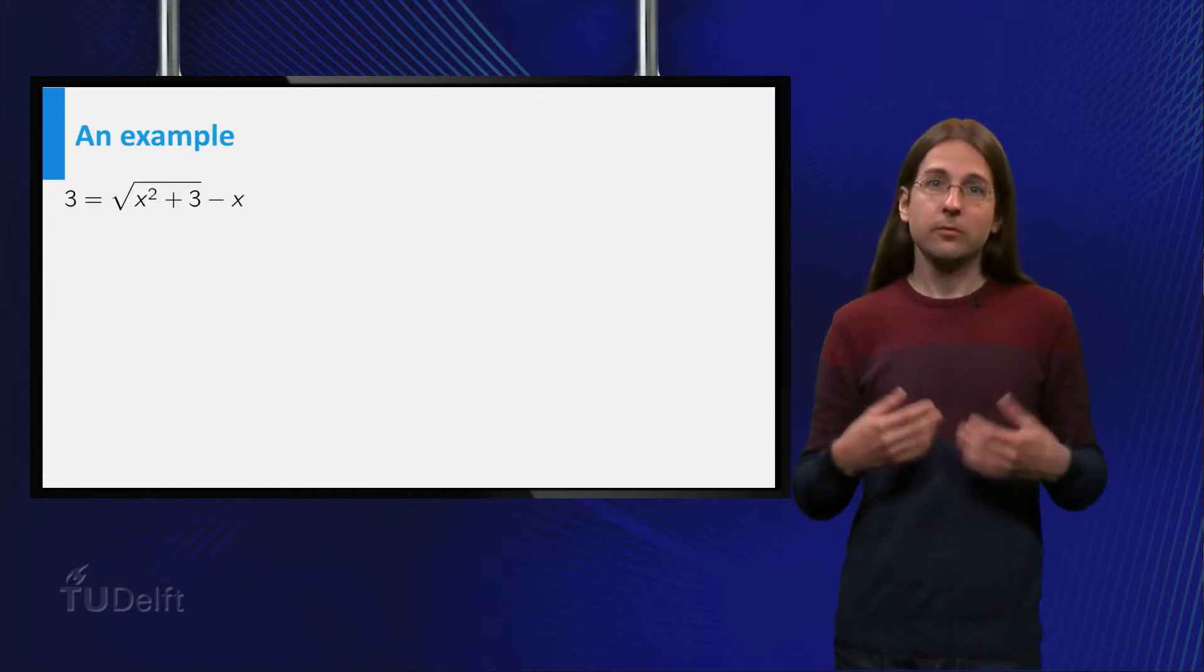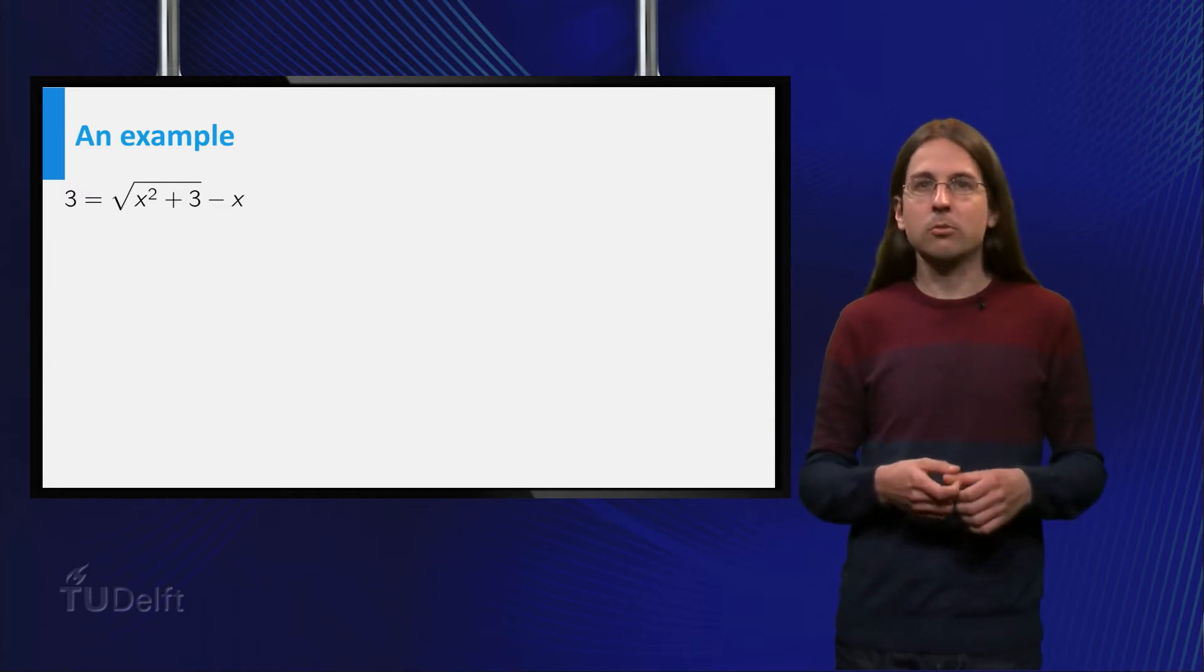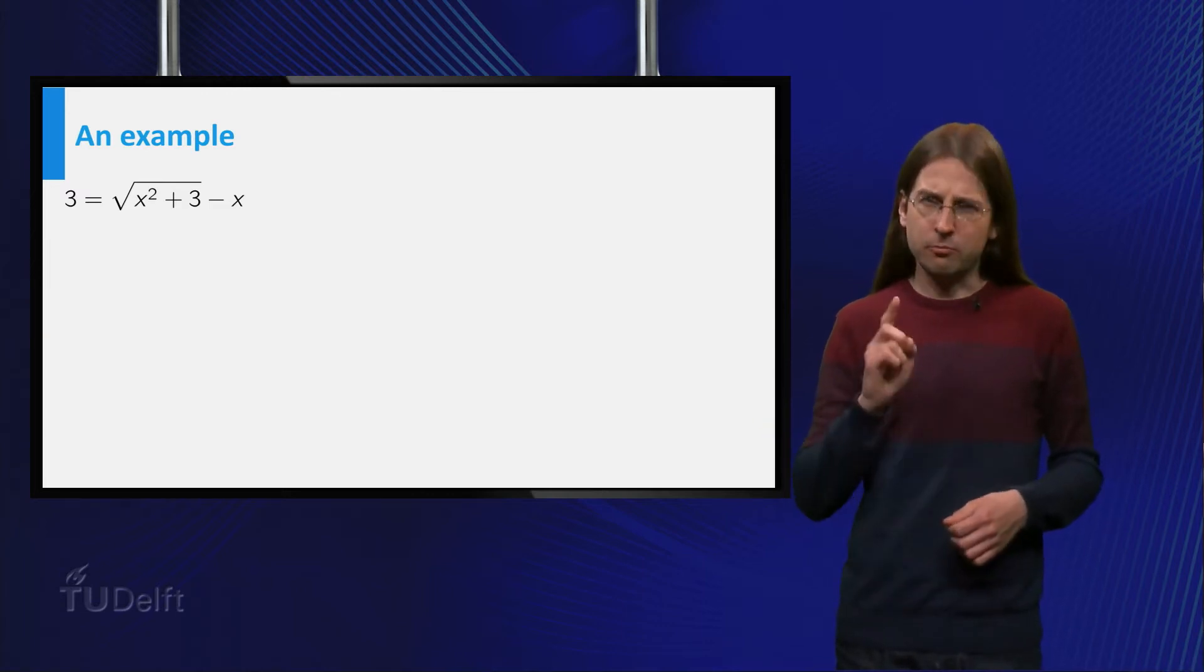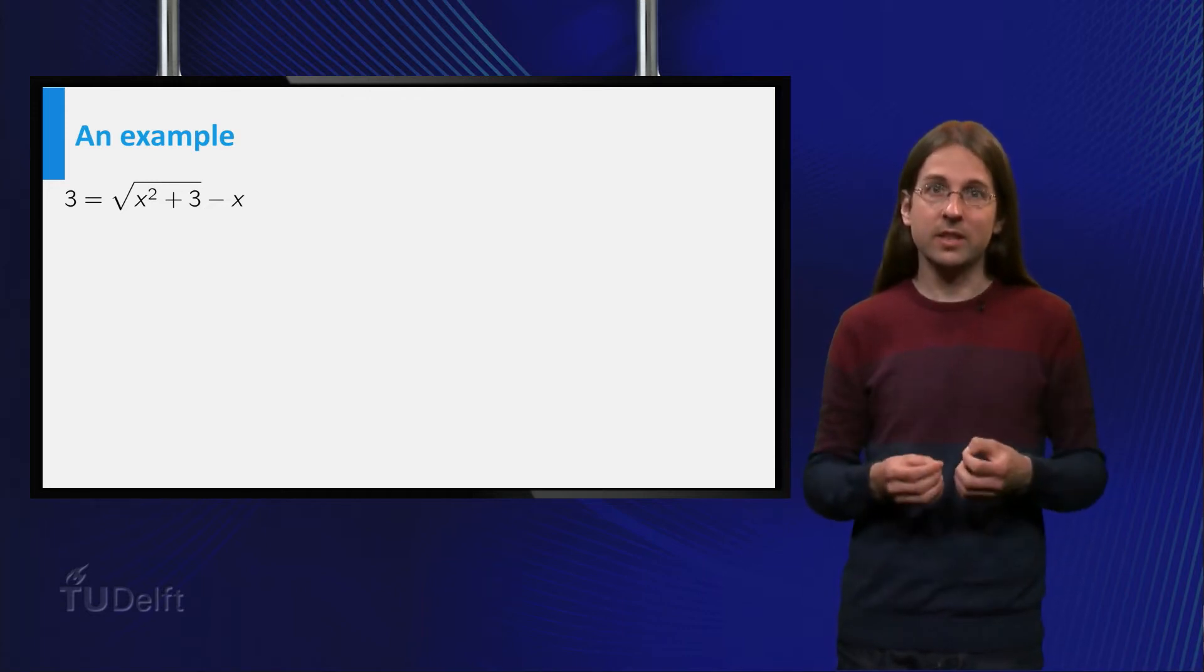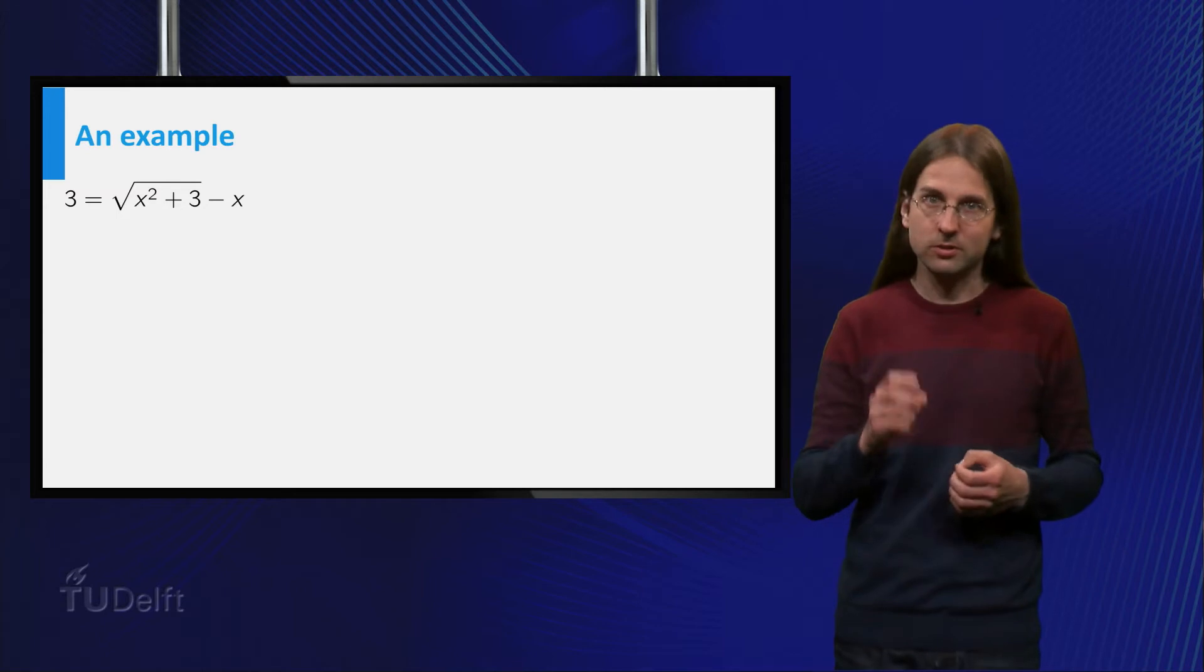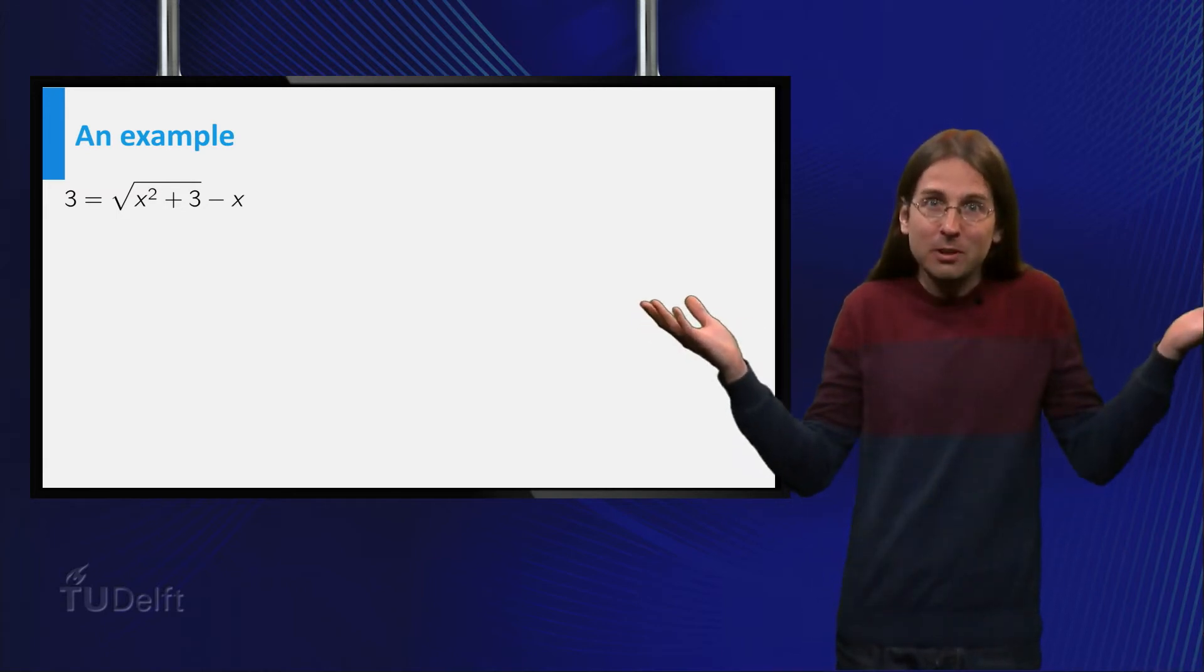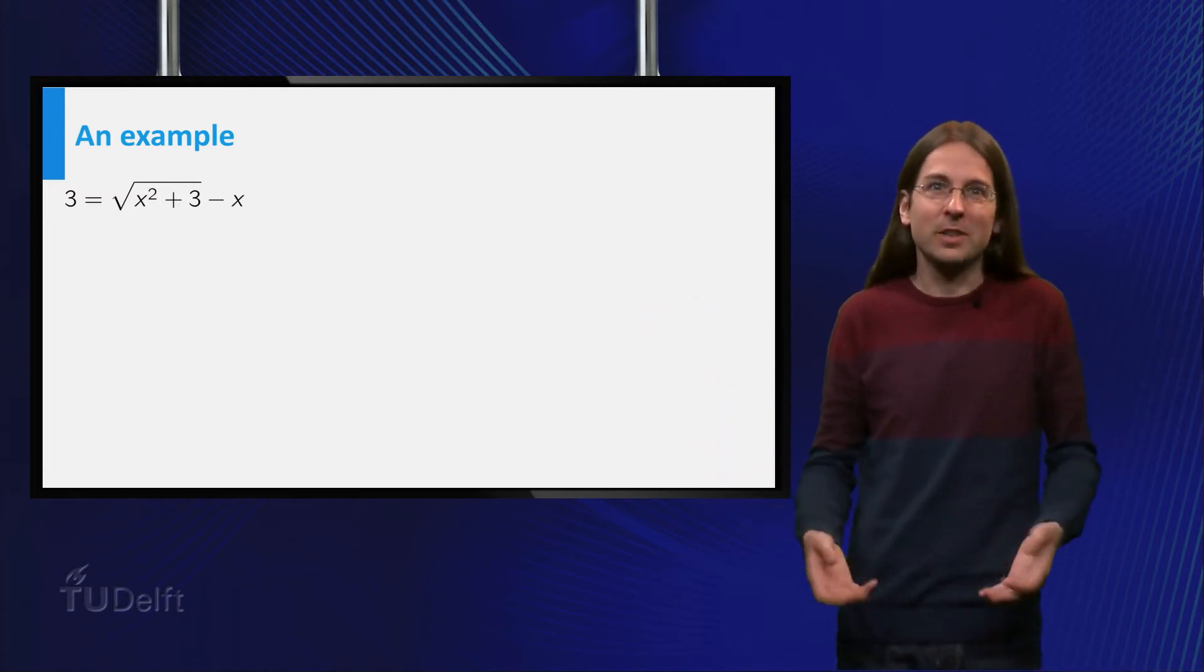Consider the equation 3 equals the square root of x squared plus 3 minus x. Step 1 is to simplify, so we want to get rid of the ugliest term in this expression, the square root. How do you remove a square root? Well, by squaring obviously.